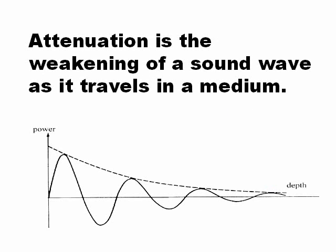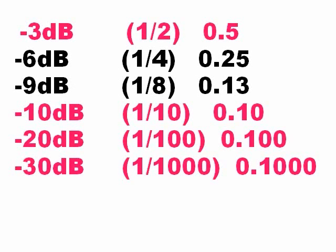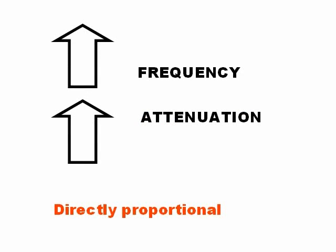The definition of attenuation is the normal weakening of the ultrasound as it travels through a medium. The units are decibels. Attenuation is determined by the frequency of the sound — the higher the frequency, the greater the attenuation — and also by the distance the sound travels: deeper structures have more attenuated ultrasound echoes. More frequency equals more attenuation.